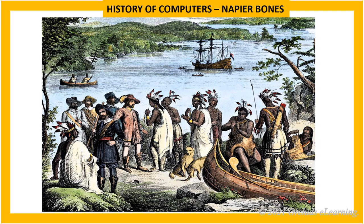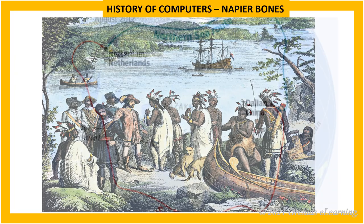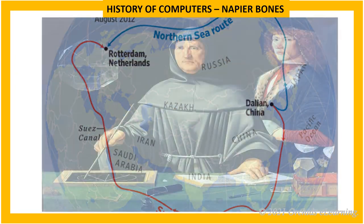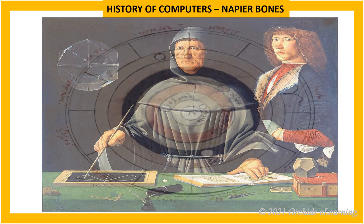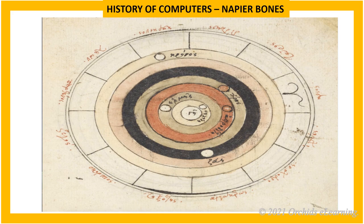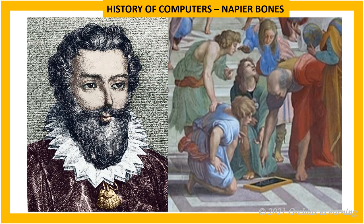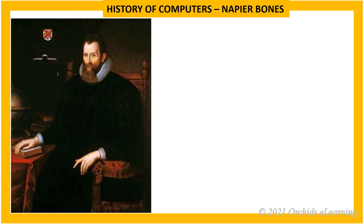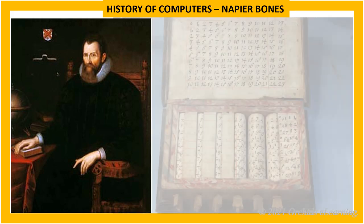Napier's Bones: By the middle of the 16th century, explorers of various continents started trading on a large scale. They needed a device for precise calculations of sea routes, accounting, planetary positions, and so on. People with mathematical proficiency were hired for jobs who could do repetitive calculations easily. In 1617, Sir John Napier invented Napier's Bones, also called Napier's Rods.